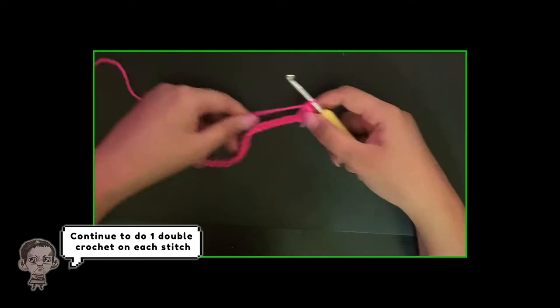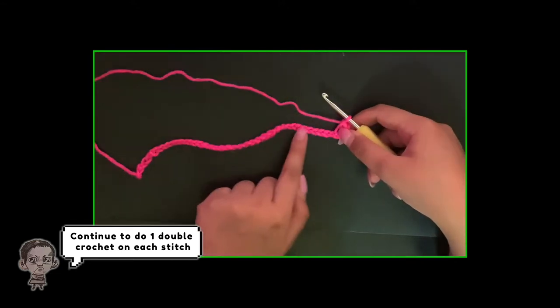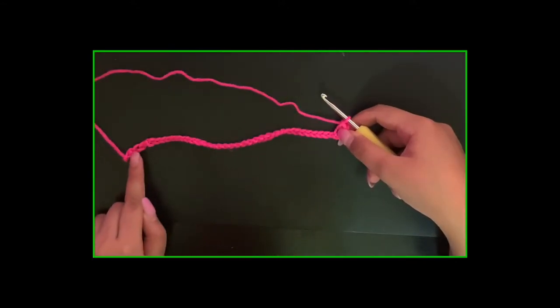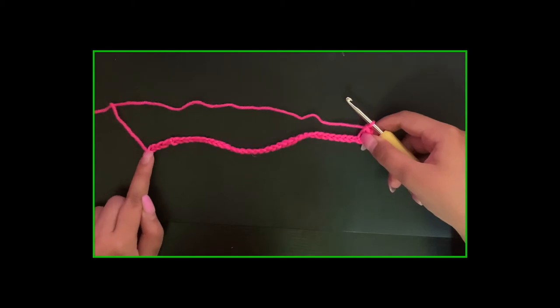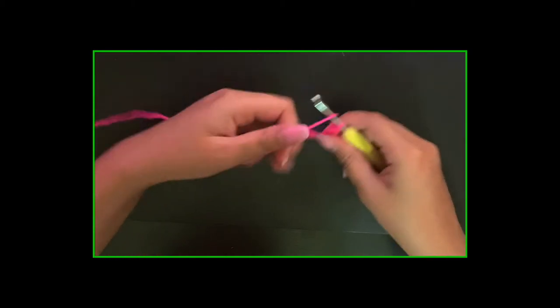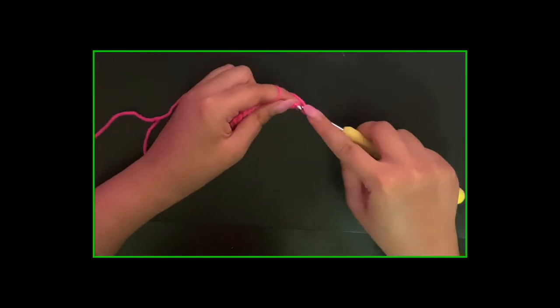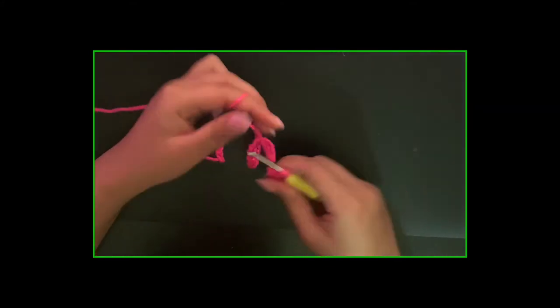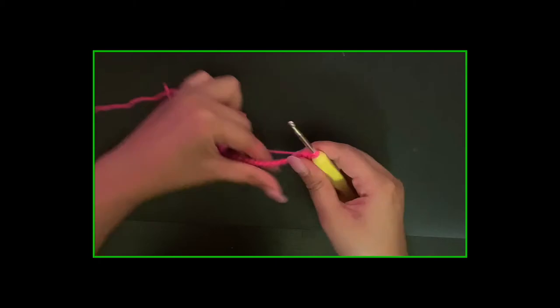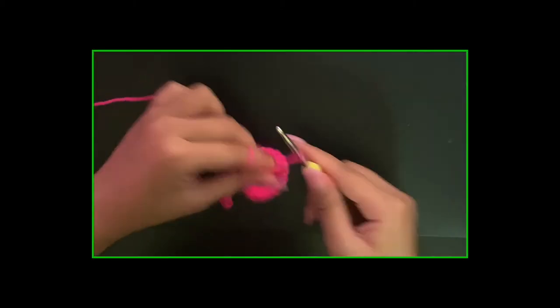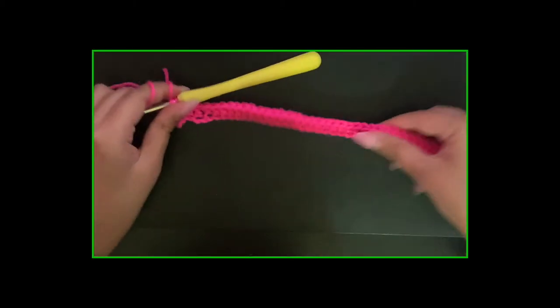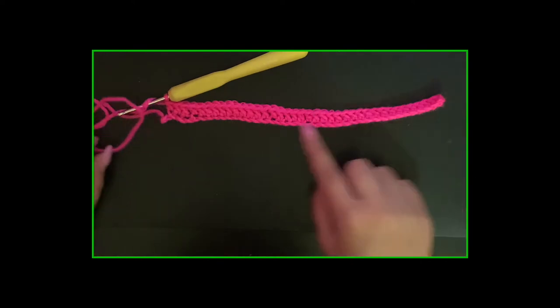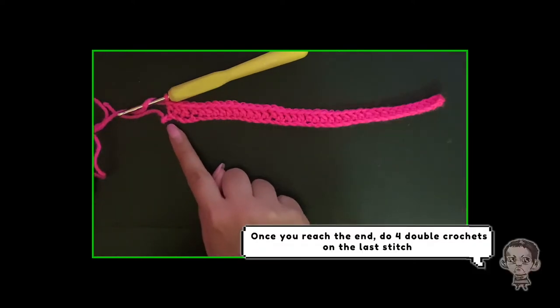Now continue to do 1 double crochet on each stitch. Once you reach the end, do 4 double crochet on the last stitch.